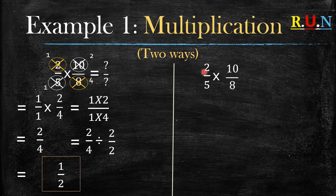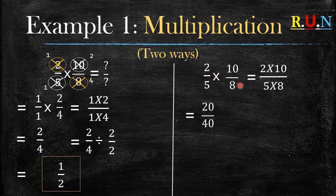The second way is straight to the point. You start by multiplying the numerators. Two times ten gives you twenty and then five times eight gives you forty. At this point as well you can also just type this into your calculator. Twenty divided by forty.